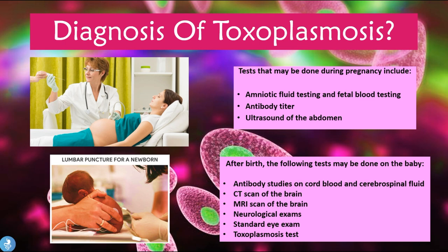There are several tests that may be done during pregnancy for diagnosis. These include amniotic fluid testing and fetal blood testing. We can also do antibody titers — specifically IgM and IgG titers — against the Toxoplasma gondii parasite. An abdominal ultrasound can also be performed since these patients often suffer from multiple organ dysfunction, allowing visualization of the enlarged spleen, enlarged liver, hydrocephaly, macrocephaly, and so on.